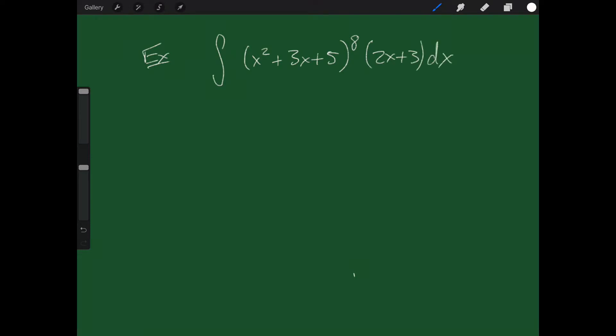Now first of all, we could do this by just multiplying x² + 3x + 5 out eight times, and then multiplying by 2x + 3, and then taking an antiderivative. That's an absolute nightmare, but we could do it. We don't want to.